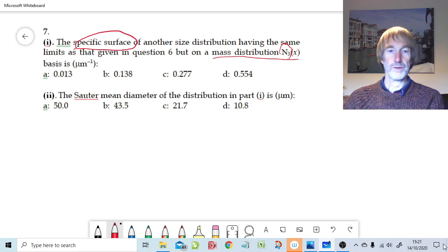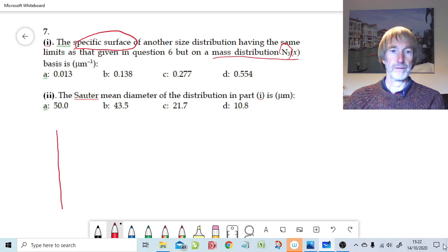What does an N3 distribution look like? Well, not normally like this one, because this refers to the same limits that were given in question 6. In question 6 we had a slightly unusual distribution in that it was a straight line going from 1 to 101 microns. So that was 0, and that's going to be 1.0. In question 6, this is a number distribution, so that was N0x. In question 7, it's a mass or volume distribution, which is N3x.